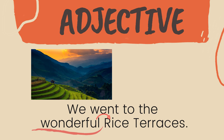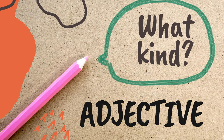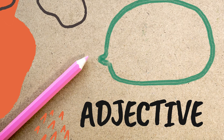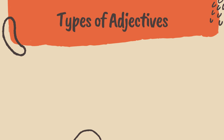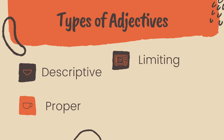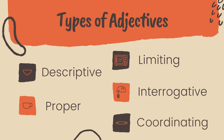Adjectives answer the questions: What kind? How many? Or which ones? The various types of adjectives are: descriptive adjectives, proper adjectives, limiting adjectives, interrogative adjectives, and coordinating adjectives.